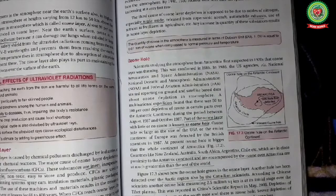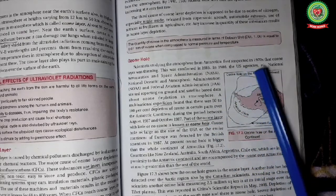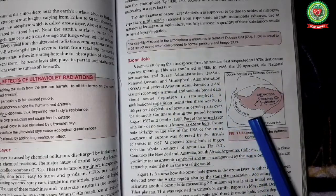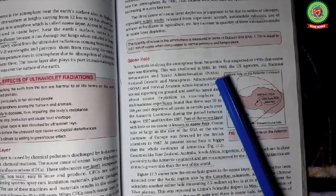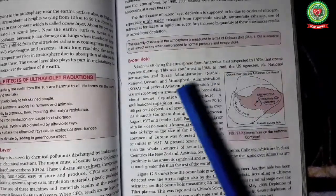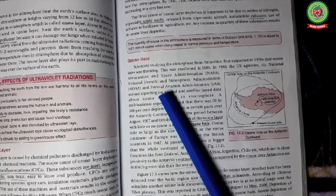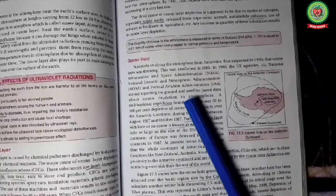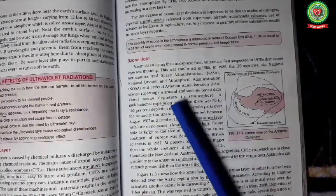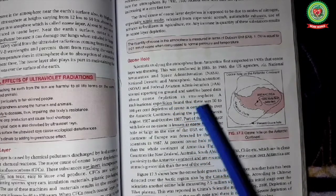Scientists studying the atmosphere from Antarctica first suspected in 1970s that ozone layer was thinning. This was confirmed in 1985. In 1986, the US agencies, NASA National Aeronautics and Space Administration, the National Oceanic and Atmospheric Administration NOAA, and Federal Aviation Administration FAA started reporting on the ground and satellite based data about ozone depletion in stratosphere.